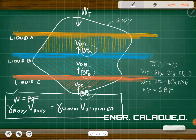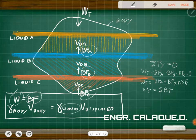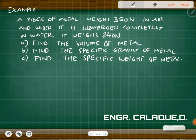In simplicity, weight is just equal to the buoyant force. Weight is unit weight times volume — for the whole body, that's the unit weight of the body times the volume of the body. The buoyant force is with respect to the liquid, so it's the unit weight of the liquid times the volume displaced. These two are equivalent.